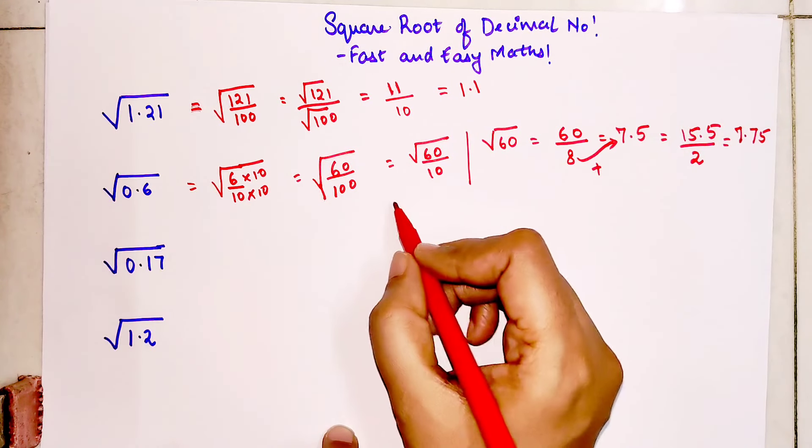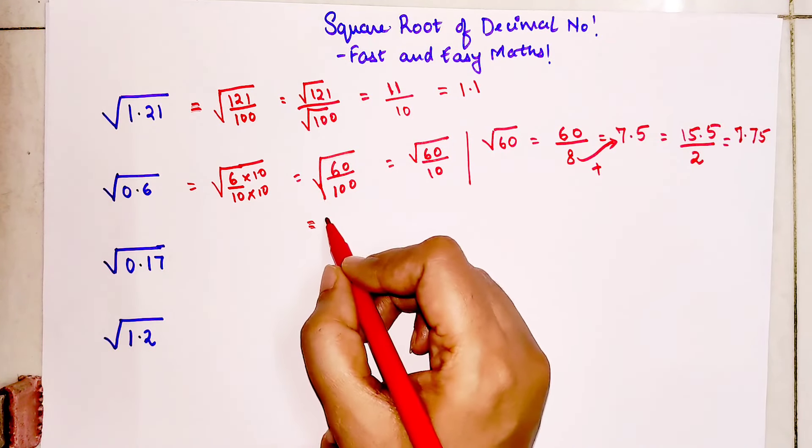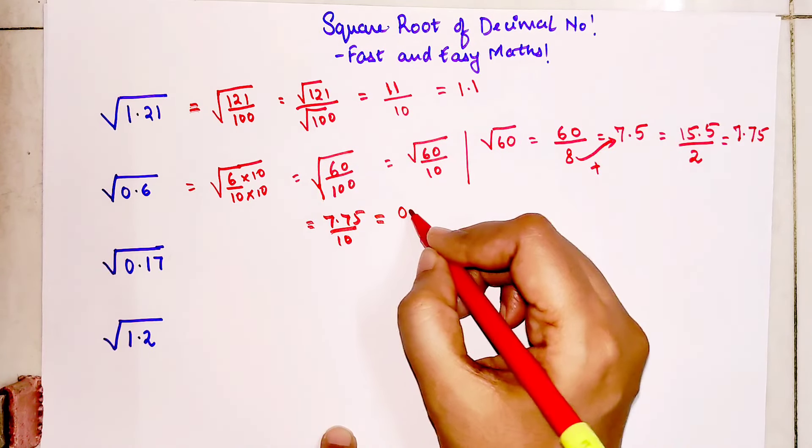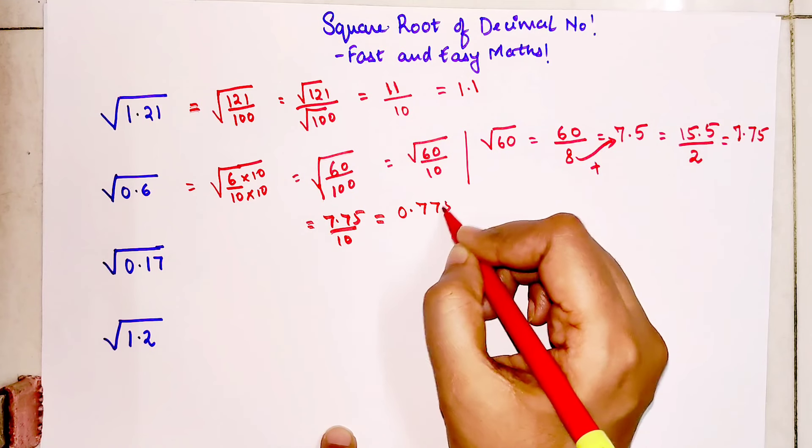But you need what? So basically this is nothing but 7.75 upon 10, so my final answer will be 0.775.